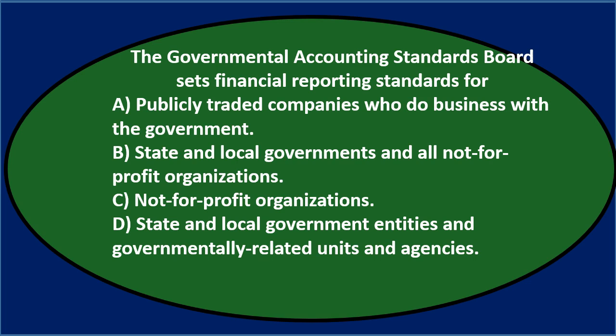First question: the Governmental Accounting Standards Board sets financial reporting standards for either A, publicly traded companies who do business with the government; B, state and local governments and all not-for-profit organizations; C, not-for-profit organizations; or D, state and local government entities and governmentally-related units and agencies.